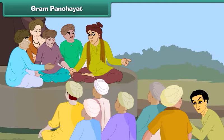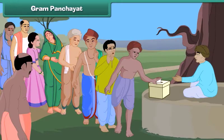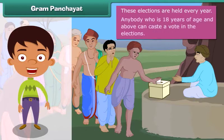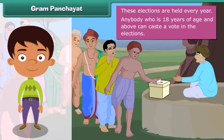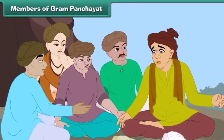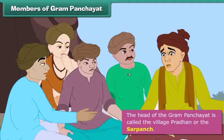A gram panchayat is the local government of a village. It is formed by members selected by the villagers in gram panchayat elections. These elections are held every five years. Anybody who is 18 years of age and above can cast a vote in the elections.